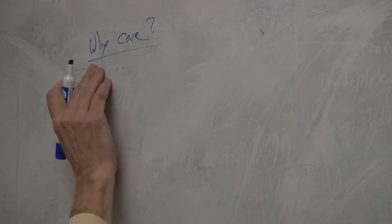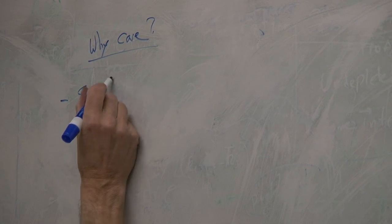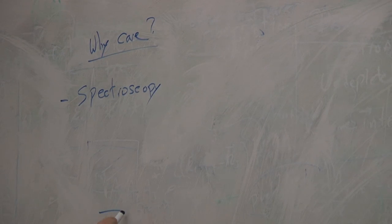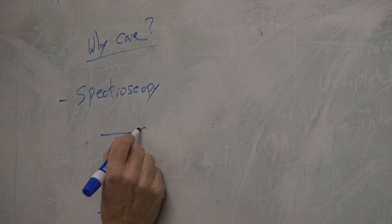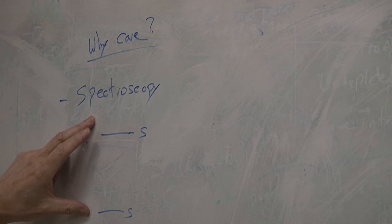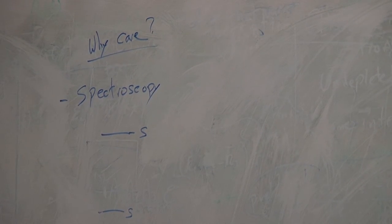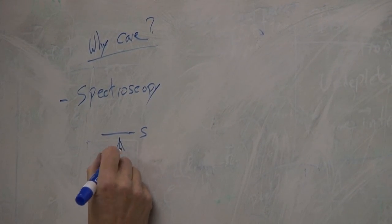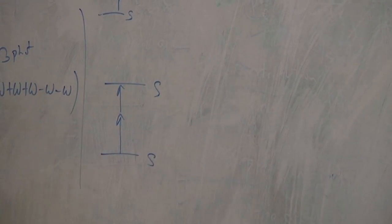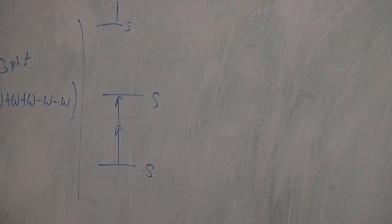Why do people even care about multi-photon absorption? Let me give two simple reasons. One is spectroscopy. Let's say you have an S-state here and another S-state here, and you want to know the energy separation. Selection rules say you cannot do a one-photon transition between S-states — it's a forbidden transition — so instead you'd have to use two-photon absorption to study that transition.